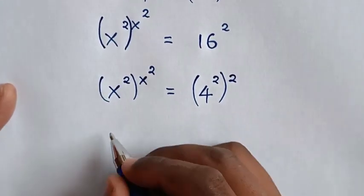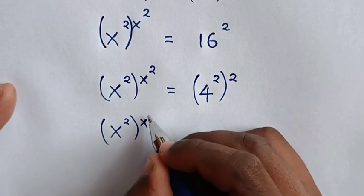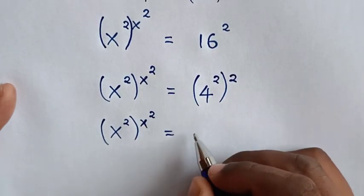Then in our equation, (x^2)^(x^2) is equal to (4^2)^2.